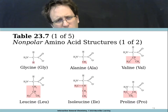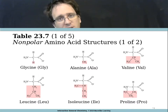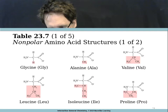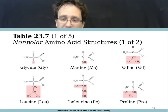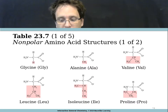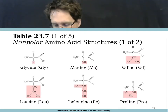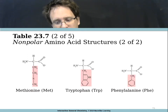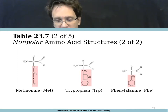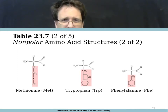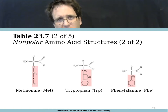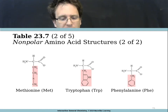Proline is notable because its R group wraps around and connects back onto the amine group — there's actually a typo in the figure; the amine group on proline should only have two hydrogens instead of three because one bond is taken up by the R group carbon. There are three more non-polar amino acids: tryptophan and phenylalanine both have cyclic conjugated structures with alternating double bonds and resonance stabilization, and methionine has a sulfur, but sulfur-carbon bonds are not very polar, so it's still considered non-polar.